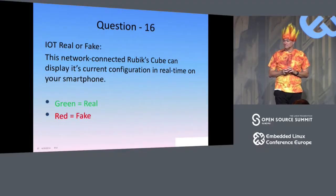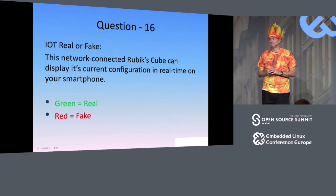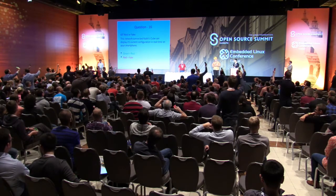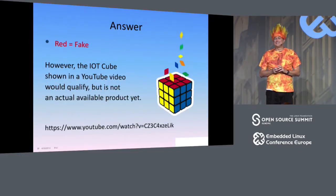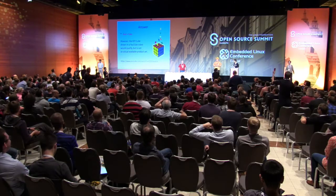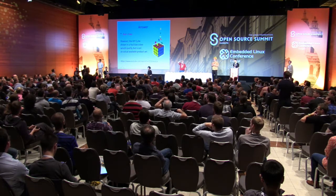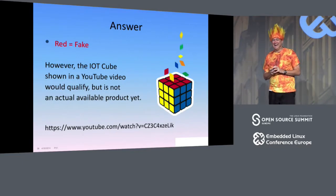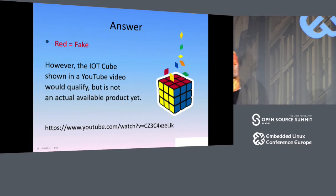IoT Real or Fake: this network-connected Rubik's Cube can display its current configuration in real time on your smartphone. There's actually a YouTube video that shows something like this. The game is not fair — I cannot prove it doesn't exist. It looks like we have about three people still standing.